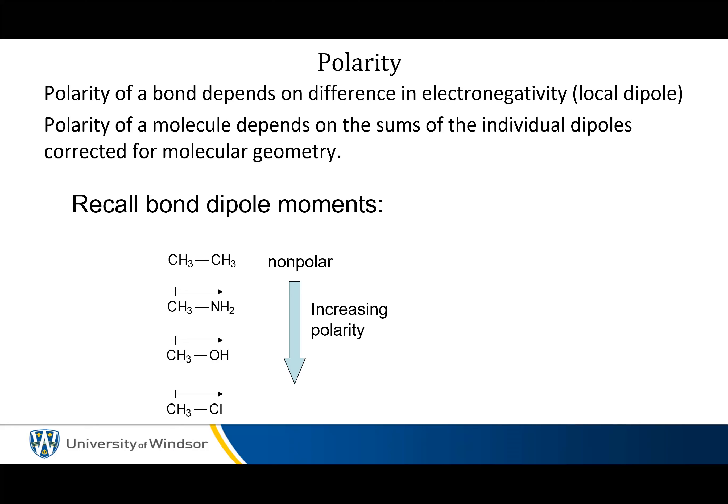The polarity of a bond depends on differences in electronegativities between the atoms on either end of the bond, whereas the polarity of a molecule depends on the sums of all the individual dipoles. Every bond is polar and is a vector with an amplitude and a direction. The overall polarity of the molecule is the sum total of all those vectors.